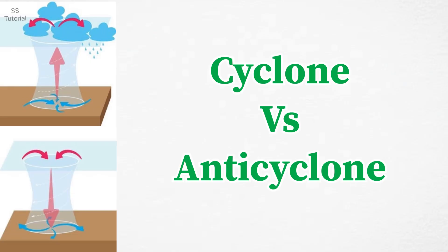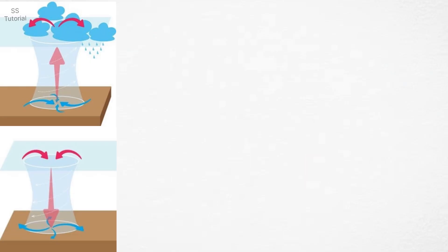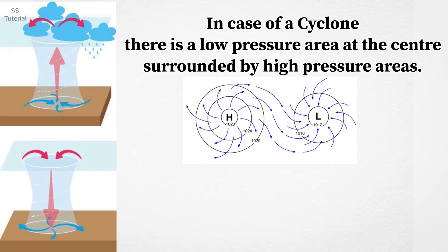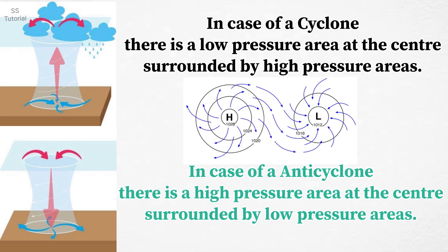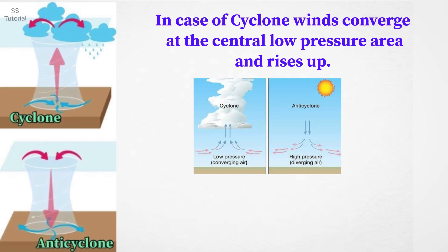Let's know the difference between cyclone and anticyclone. In case of cyclone, there is a low pressure area at the center, surrounded by high pressure area. And in case of anticyclone, there is a high pressure area at the center, surrounded by low pressure area.